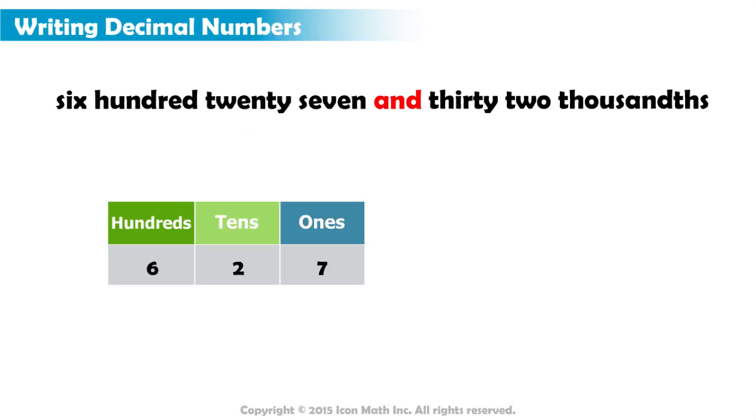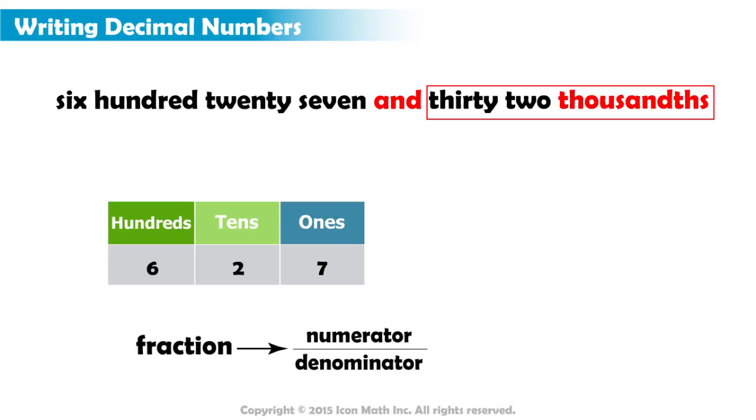And now comes the part on the right of the AND, which should be on the right of the decimal point in our chart. This part is read as 32 thousandths. To represent it on the chart, we first need to notice the last bit of the sentence. It says thousandths. This immediately tells us that the decimal part represents a fraction with a numerator and a denominator, with 1,000 in the denominator.